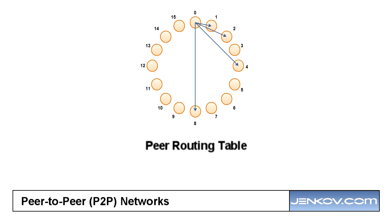Once the peers are organized into this ring, each peer needs to have a set of references to other peers in the network so that it is able to communicate with them. But if you imagine a peer-to-peer network with millions of peers, it is not possible for each peer to have a reference to every single other peer. Therefore, each peer needs to have a reference to a subset of the rest of the peers — if there are a million peers, each peer might only have references to maybe 10 or 20 others, and via these references it is capable of finding every single peer in the network.